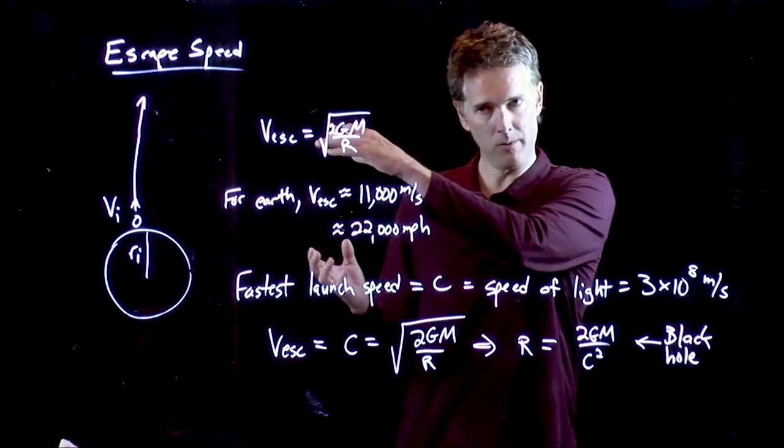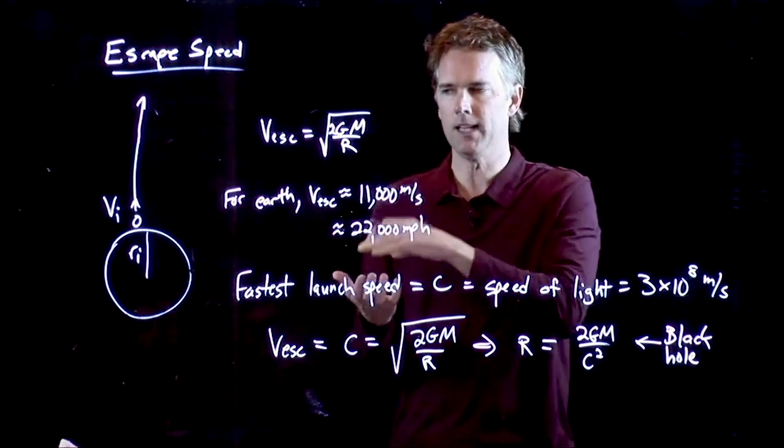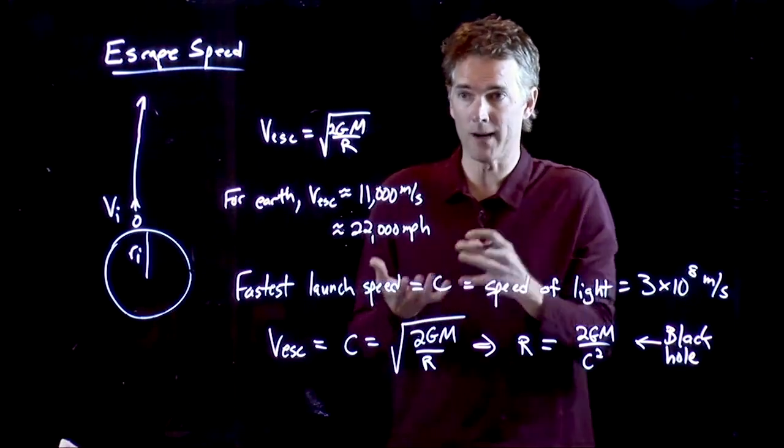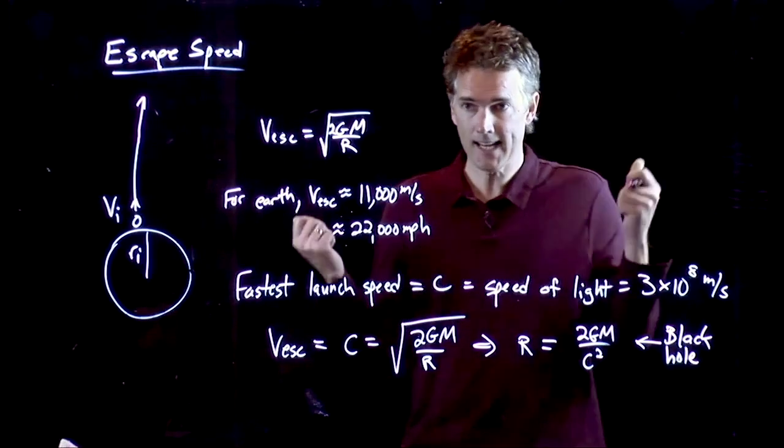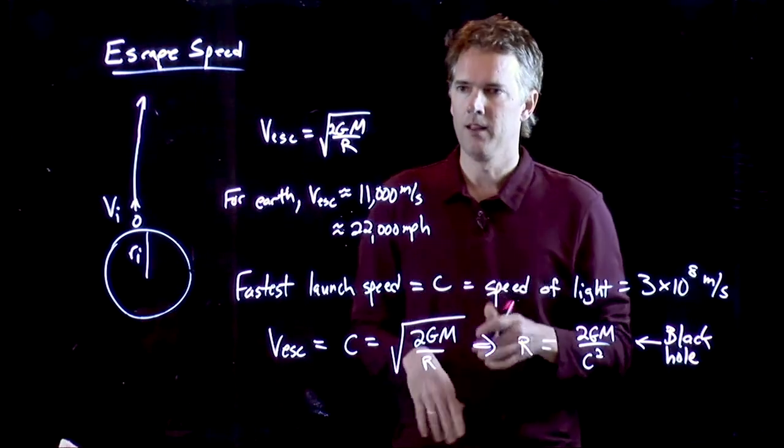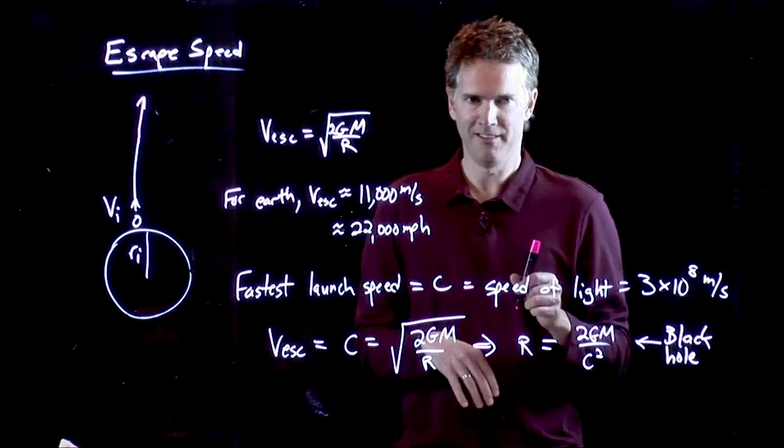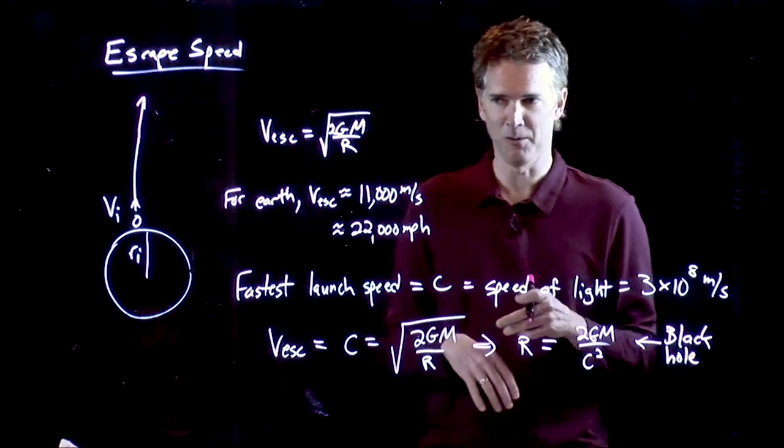If I go a little bit outside of that radius, light escapes. If I'm inside that radius, light doesn't escape. This is why black holes are black. Light can't get out of them. Why? Because the escape speed is so big that even the speed of light is not fast enough. Which is kind of cool, right? I think that's kind of cool.